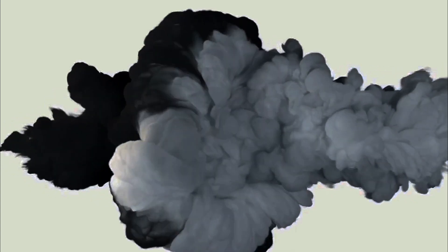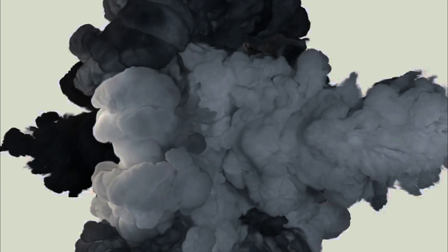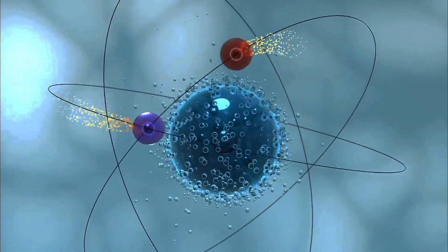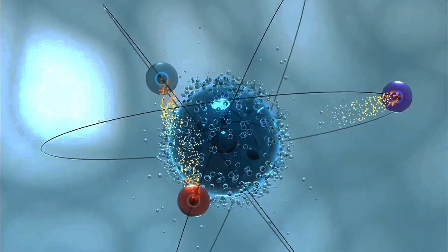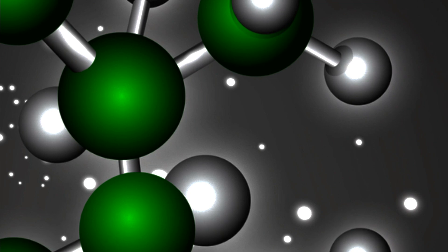Think of it like a cloud, where the density of the cloud represents the probability of finding the electron at that point. The denser the cloud, the higher the probability. The shape of an orbital is determined by the energy of the electron. Higher energy levels result in more complex shapes.